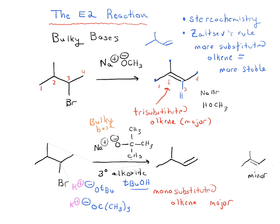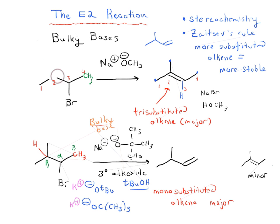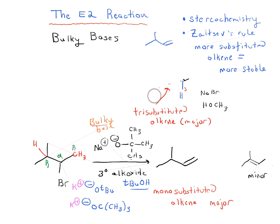So what's special about OtBu? Bulky means it takes up a lot of room. When we do the E2 reaction, we have to remove a proton from the beta carbon — the carbon next door to the alpha carbon, which is attached to the bromine. When we have normal NaOCH3, it can remove a proton from carbon 2 to give us our Zaitsev product. In the case of a bulky base like NaOtBu, we start to hit something called steric hindrance. Let me draw this out in more detail.